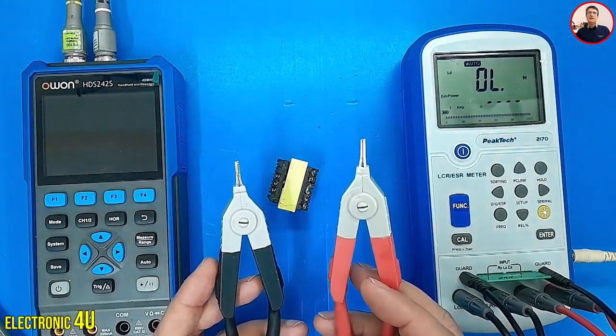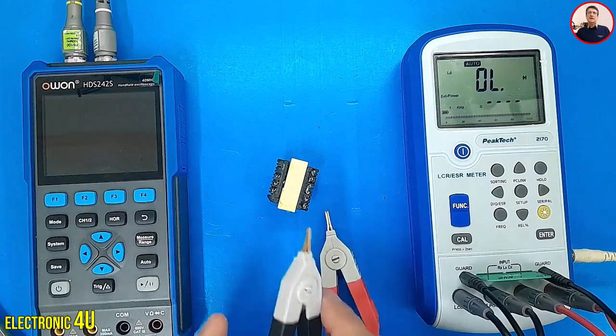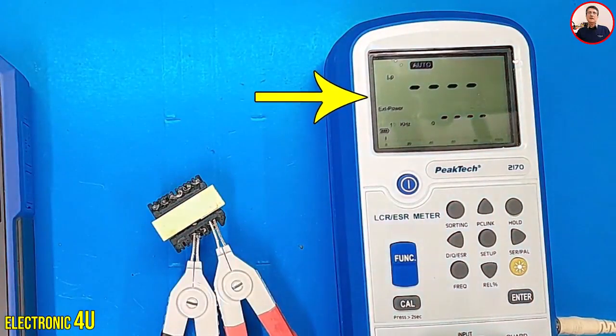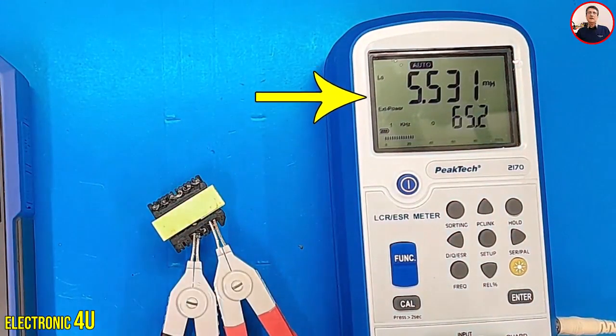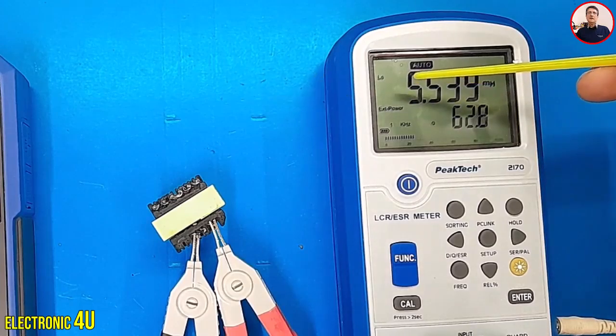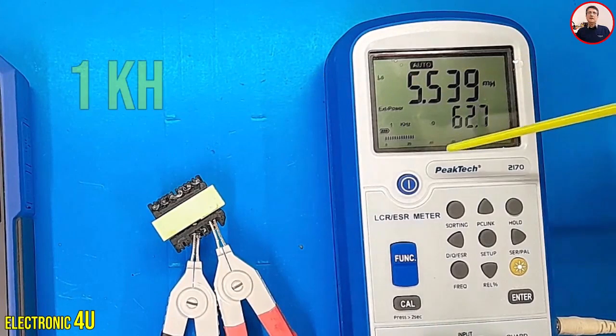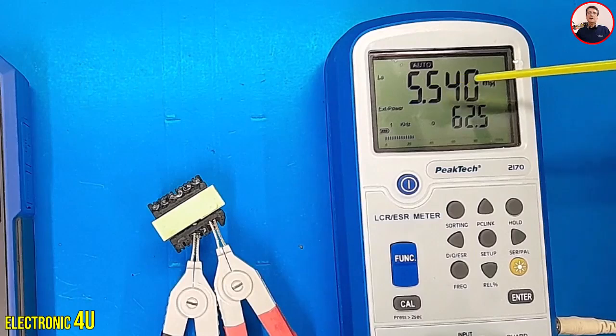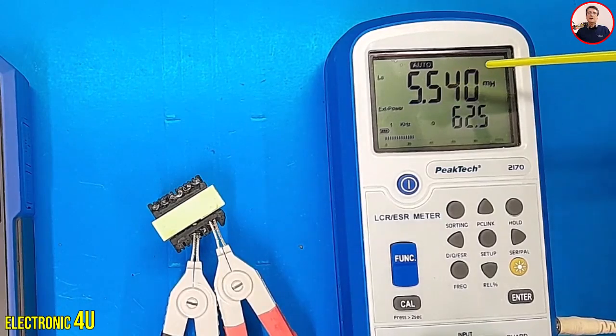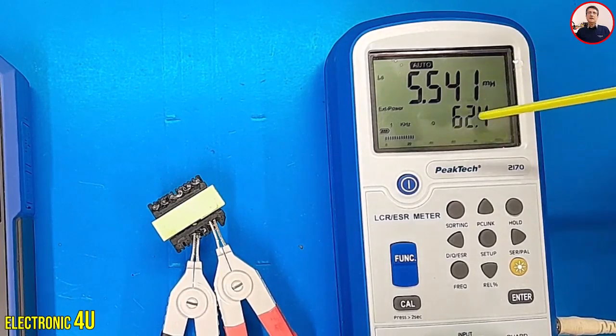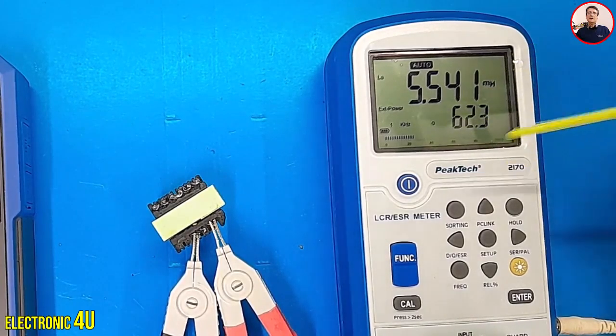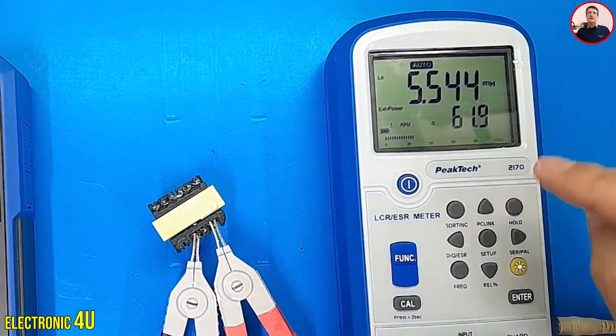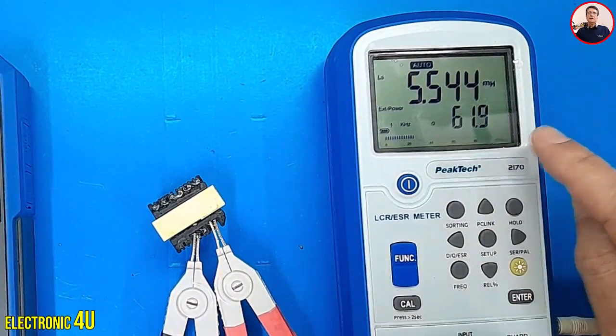I connect the clips to the transformer's primary winding. The LCR meter displays the series parameters for this inductor. The frequency is set to 1 kHz. The inductance is 5.540 mH. Since we don't know the exact inductance value, what is important to us? The secondary parameters are displayed below. By pressing this button, we can view the secondary parameters.